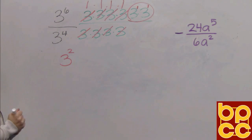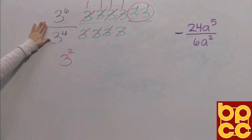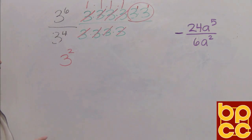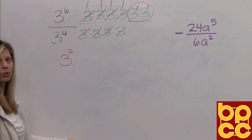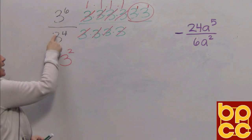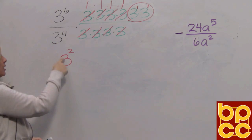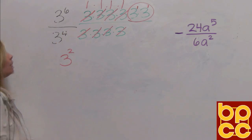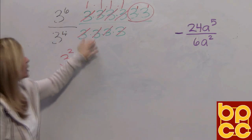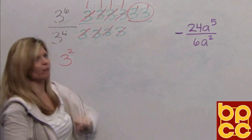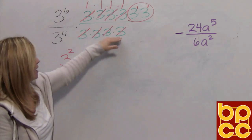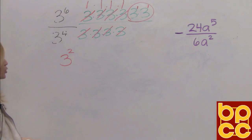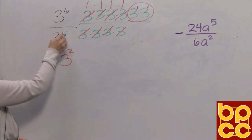So our job today is to figure out how you can look at this division expression and come up with this result without doing the work. We have what we call the quotient rule. The quotient rule says when you divide the same base — the base stays — what you're technically doing is subtracting the exponents. You had six threes, you took away four of them, that left you with two. So that is our quotient rule: when we divide the same base, we subtract the exponents.